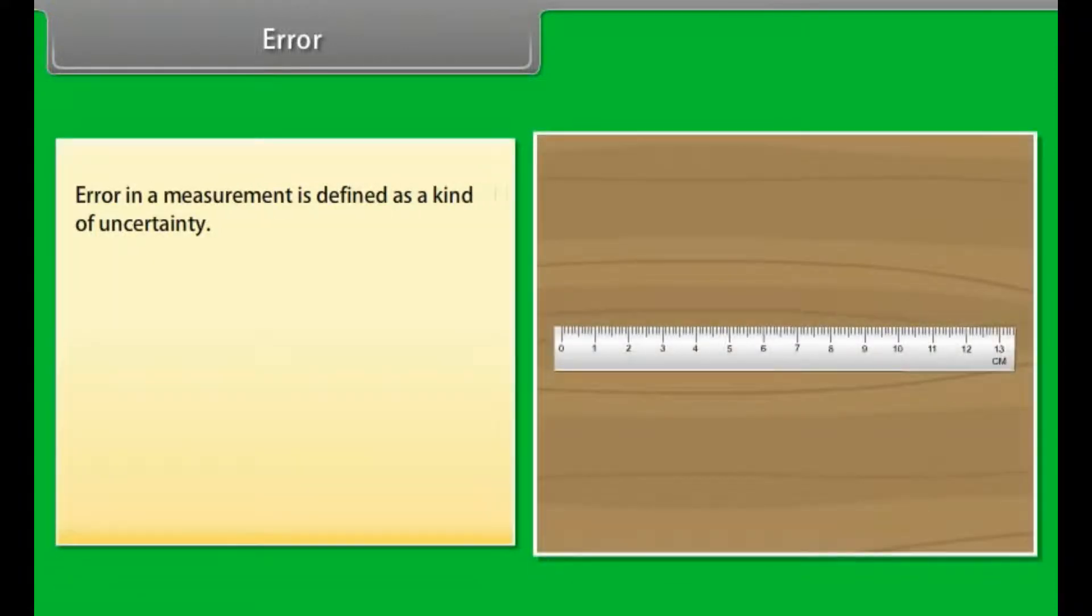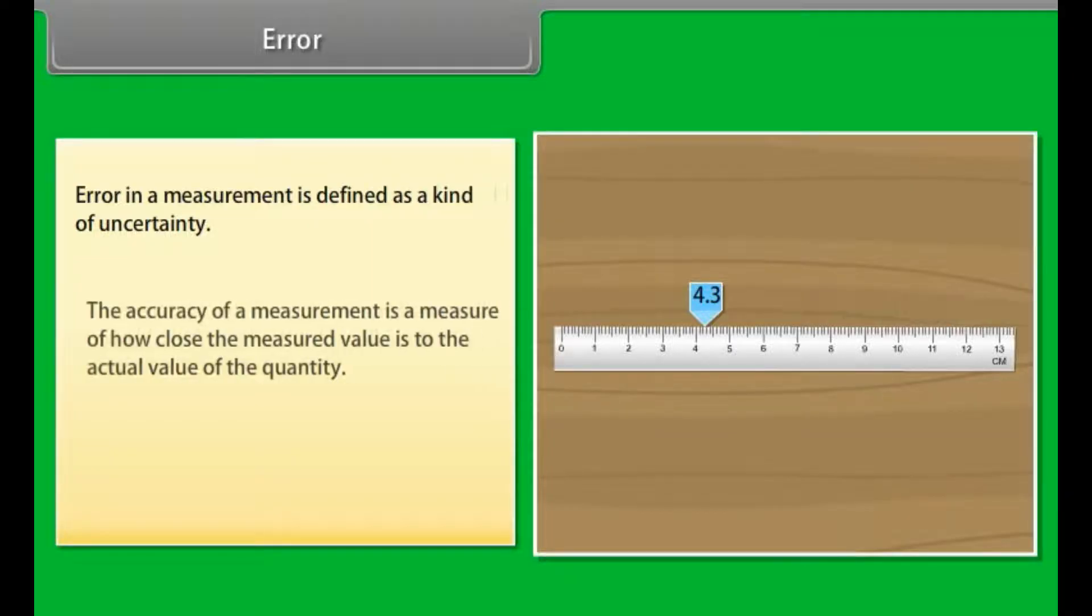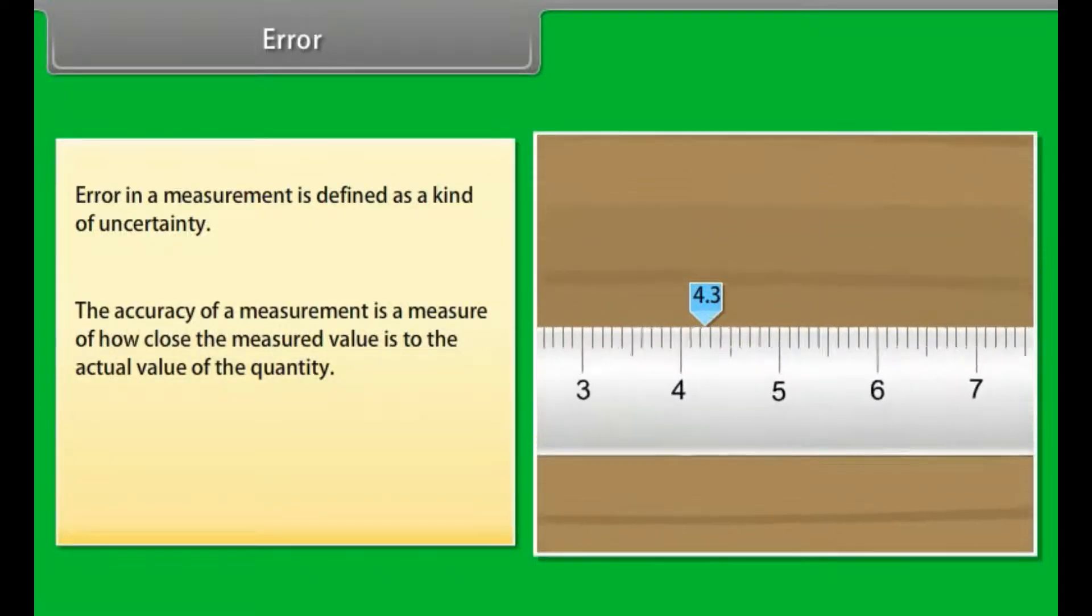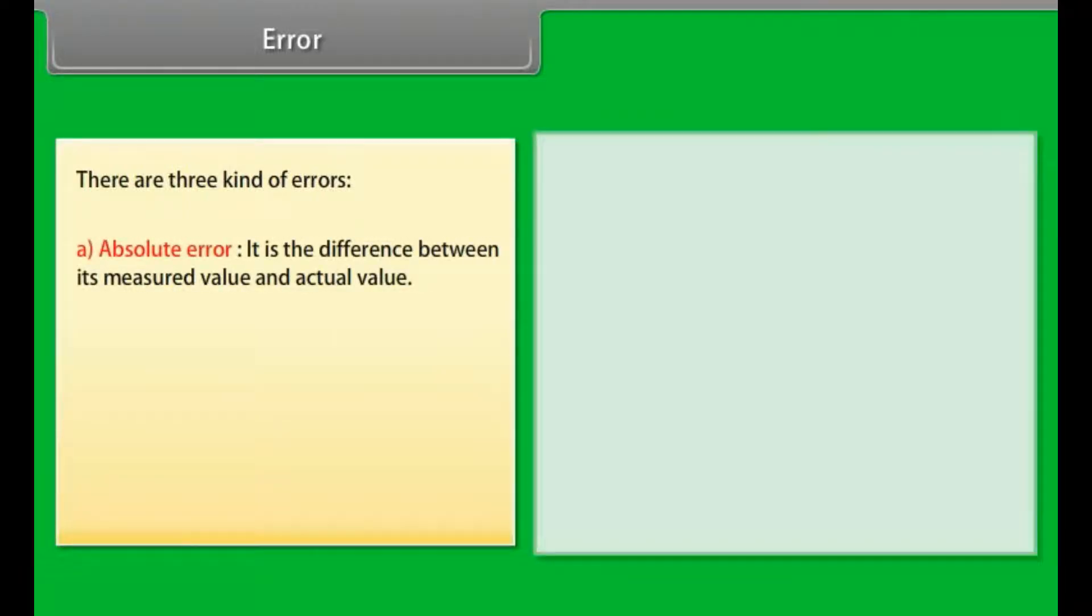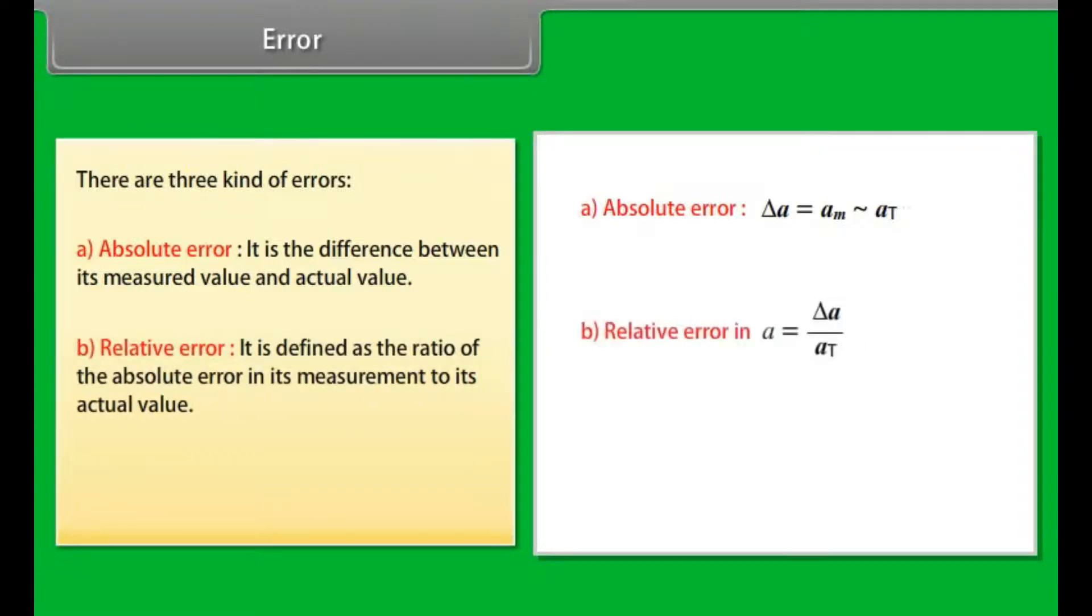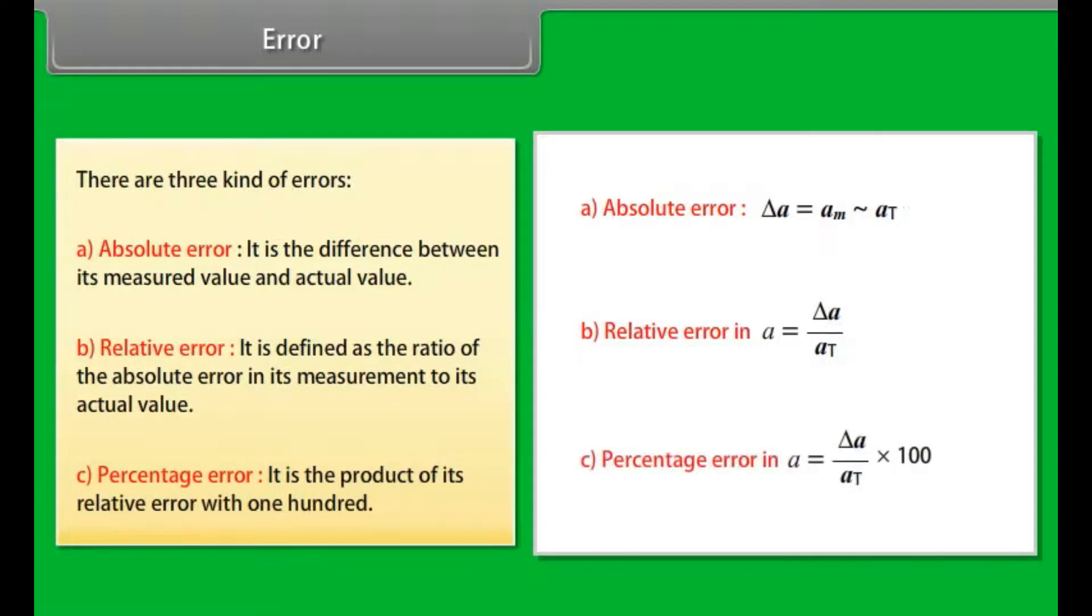Error. The result of every measurement by any measuring instrument contains some uncertainty. Error in a measurement is defined as a kind of uncertainty. The accuracy of a measurement is a measure of how close the measured value is to the actual value of the quantity. Precision tells us to what resolution or limit the quantity is measured. There are three kinds of errors: Number 1, Absolute error: it is the difference between its measured value and actual value. Number 2, Relative error: it is defined as the ratio of the absolute error in its measurement to its actual value. Number 3, Percentage error: it is the product of its relative error with 100.